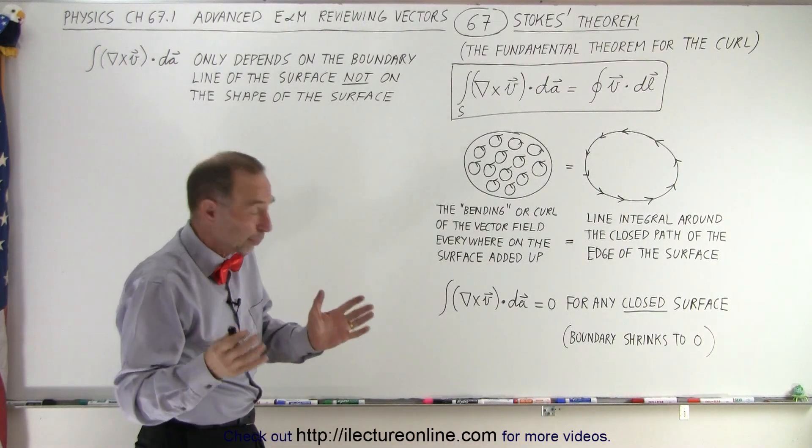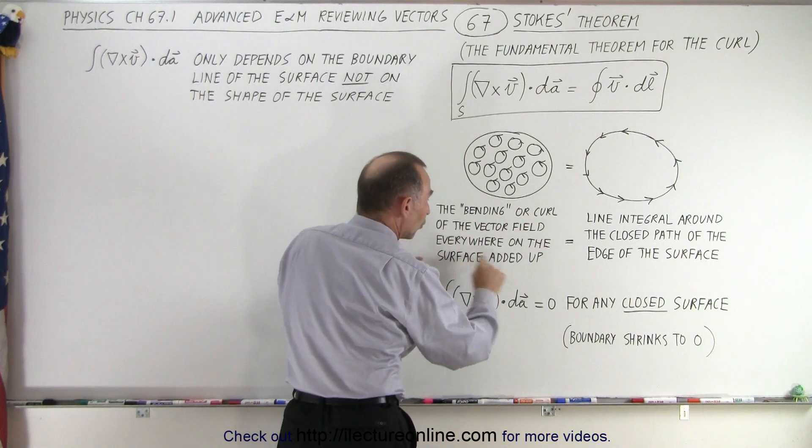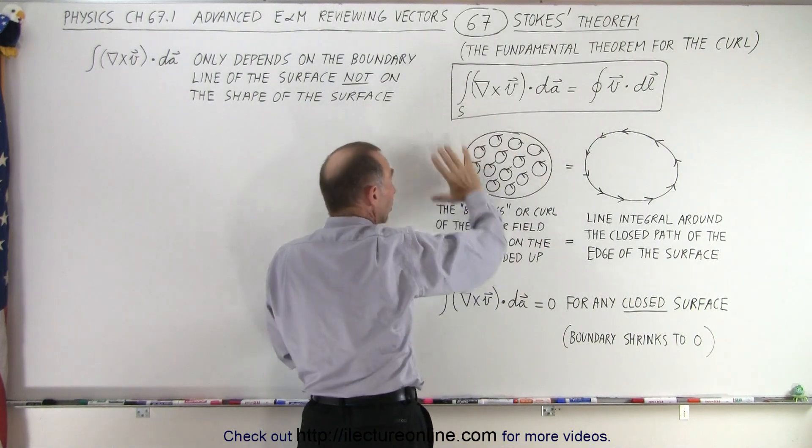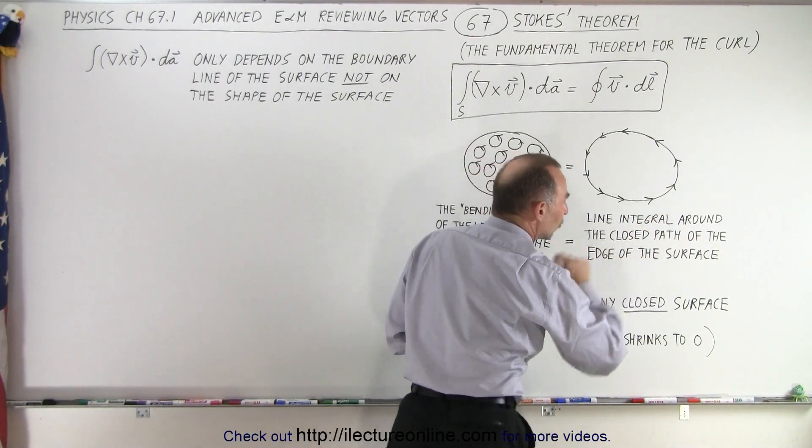So, we can write it like this. The bending or curl of the vector field everywhere on the surface added up, that's the integral of that, is equal to the line integral around the closed path of the edge of the surface.